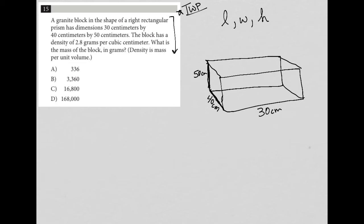The block has a density of 2.8 grams. All right. So density equals 2.8 grams per cubic centimeter, right? So per cm cubed. What is the mass of the block in grams? All right. So and then it goes on to say density is mass per unit volume. So that's a little bit of a hint that we need to find the volume of this right rectangular prism.